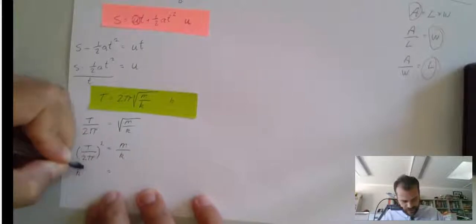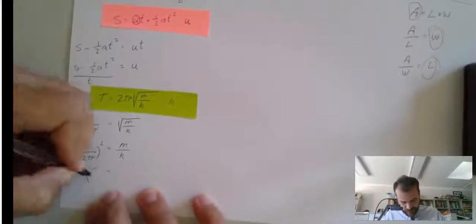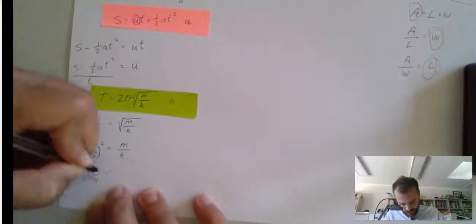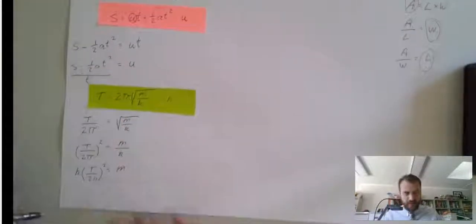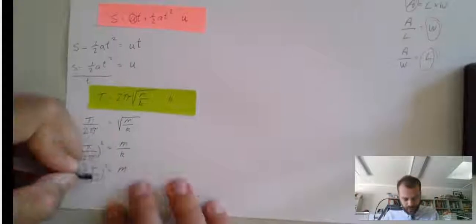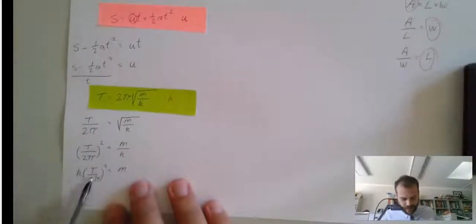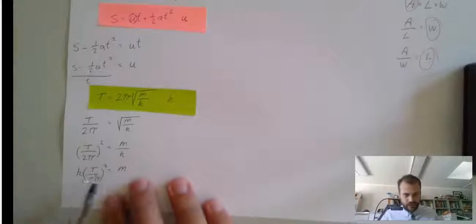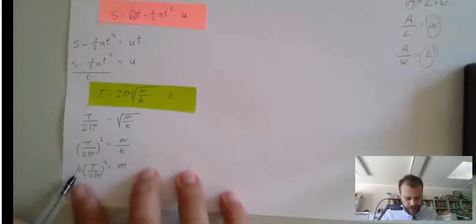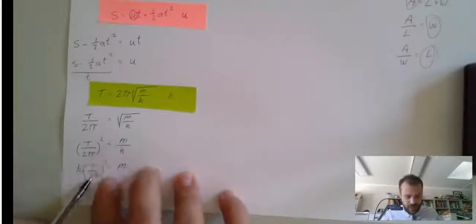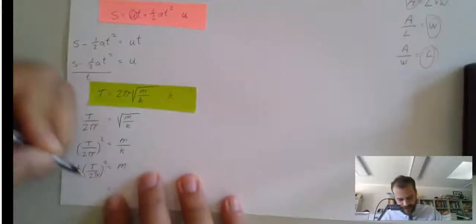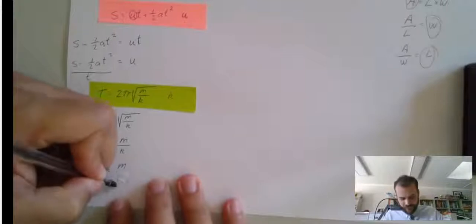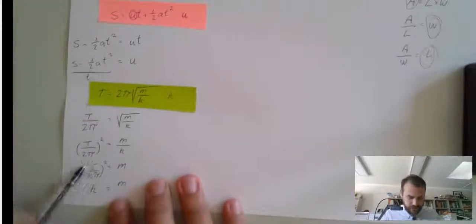So that'll be k times t over 2 pi squared equals m. So, that's k bracket t over 2 pi squared. Now, that looks like we've made a backward step, but now k is on this side with all of this stuff. k times all of this. So, I can get rid of that by dividing by all of that.